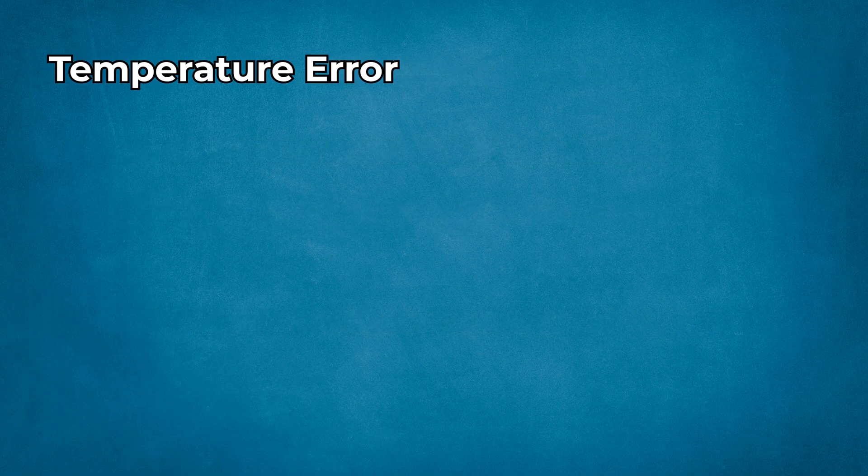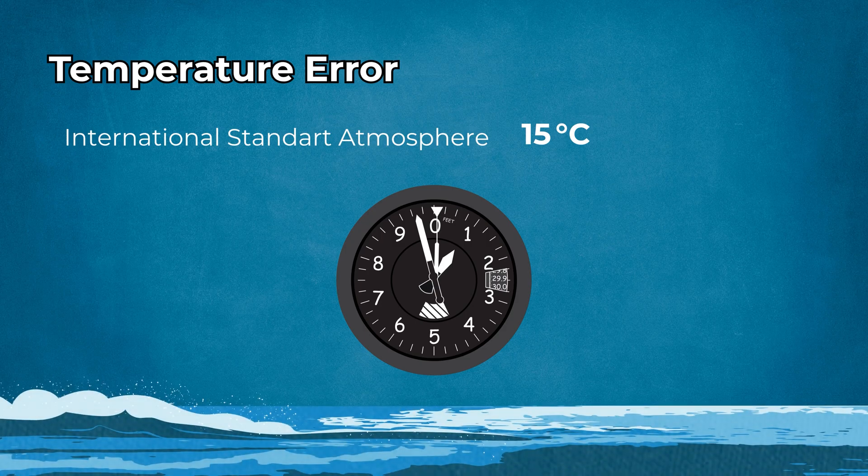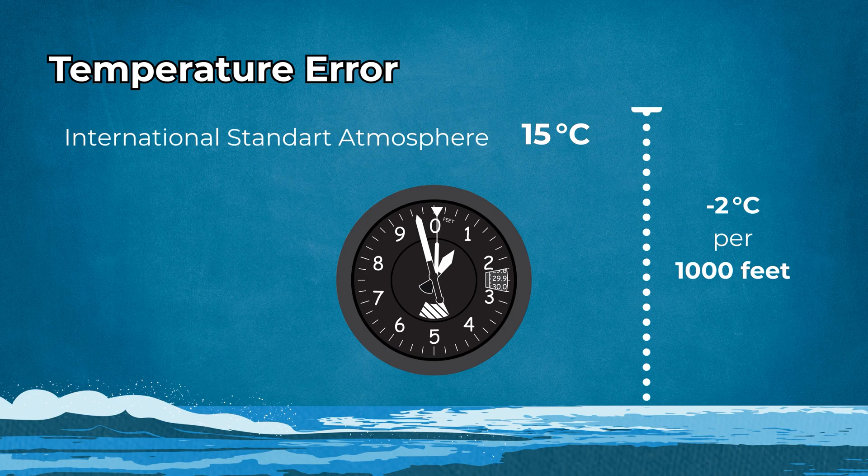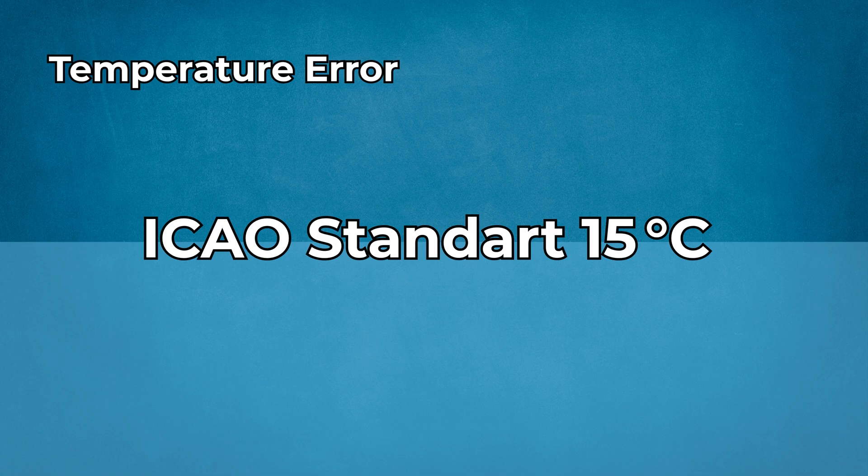Three, temperature error. Altimeters assume the International Standard Atmosphere temperature profile: about 15 degrees Celsius at sea level, dropping approximately 2 degrees Celsius per 1,000 feet. Deviations cause altitude inaccuracies. In colder than standard air, pressure levels compress closer together. So when your altimeter reads a given altitude, you're actually lower, potentially hundreds of feet.